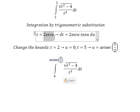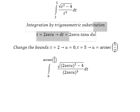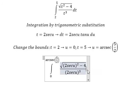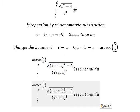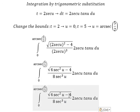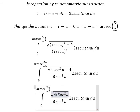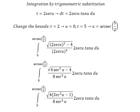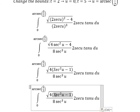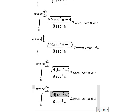We change t by 2 sec(u), dt by 2 sec(u) tan(u) du. So we get 4 sec²(u), and sec³(u). We factor out 4, and sec²(u) − 1 becomes tan²(u). The square root of 4 tan²(u) gives 2 tan(u).